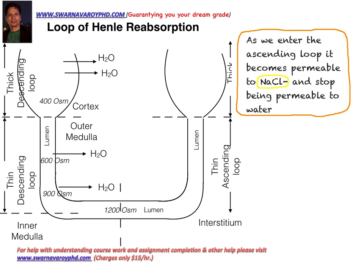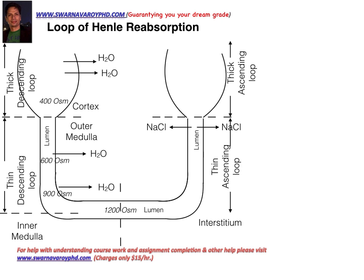Now, as we enter the ascending loop — we were talking about the descending loop all the time — as we enter the ascending loop, it becomes permeable to sodium chloride, and it stops being permeable to water. So the ascending loop is not permeable to water anymore; it is now permeable to sodium chloride. You can see how sodium chloride is now leaving the lumen and entering the interstitium.